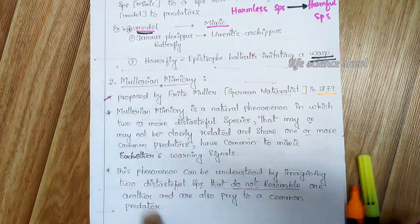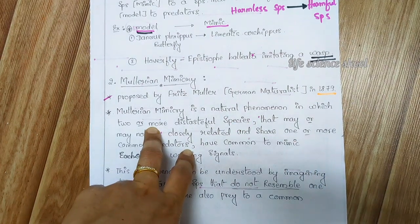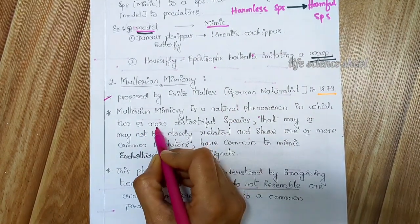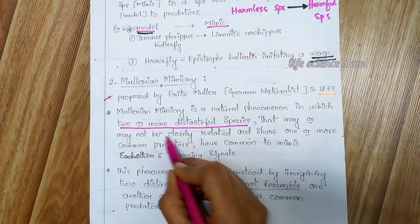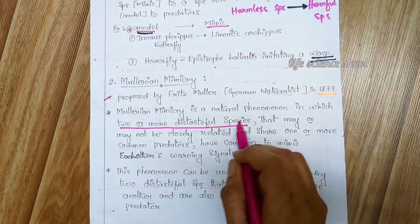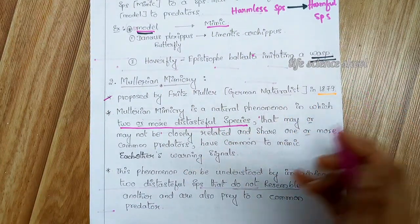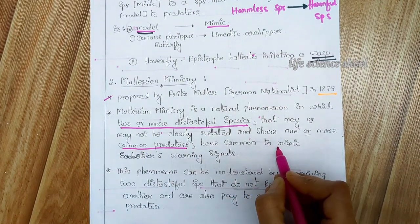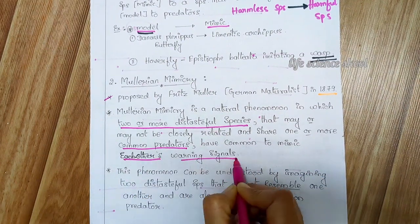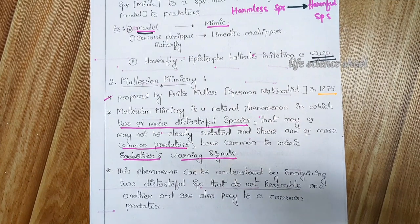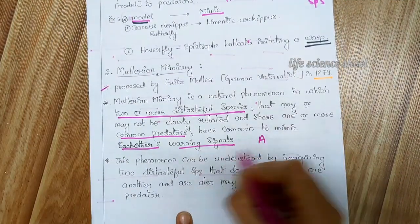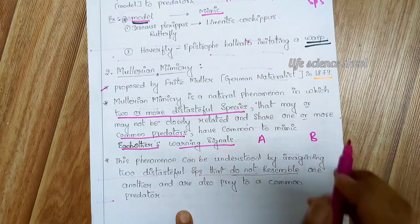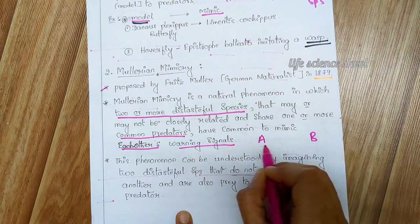Now let's look at the definition. Mullerian mimicry is a natural phenomenon in which two or more distasteful species — concentrate here — that may or may not be closely related, and share one or more common predators, have come to mimic each other's warning signals.